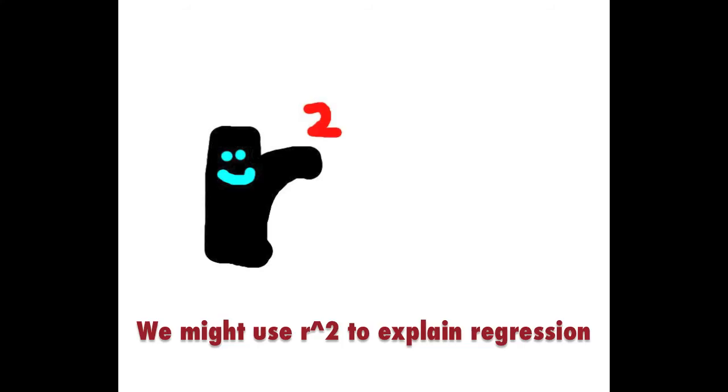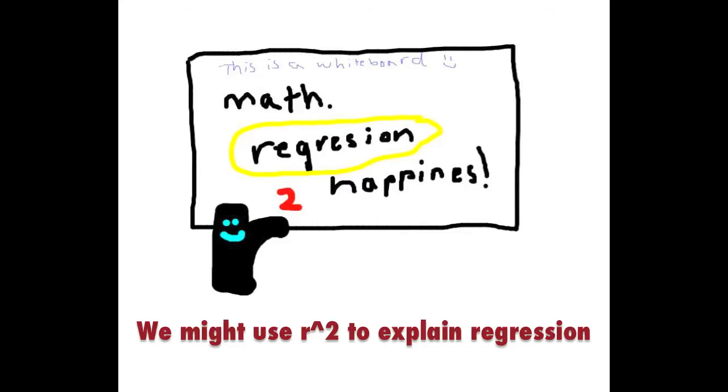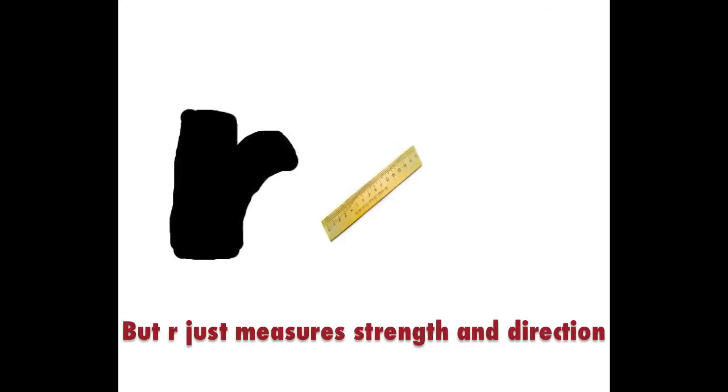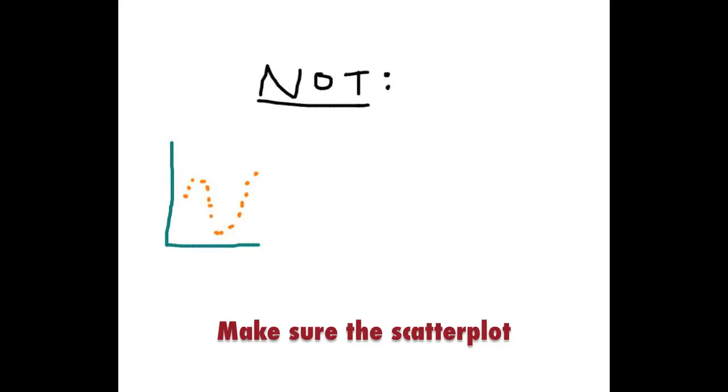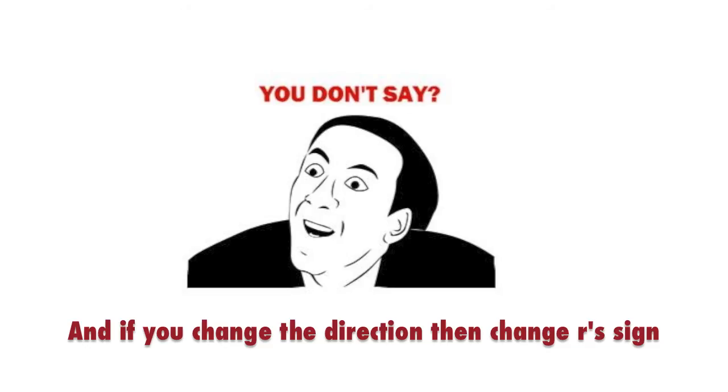We might use R-score to explain regression, but R just measures strength and direction. Think of comparison with and without outliers. Make sure the scatterplot looks vaguely linear. And if you change the direction, then change R's sign.